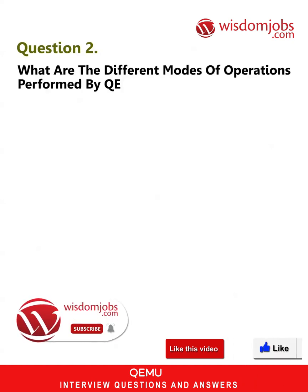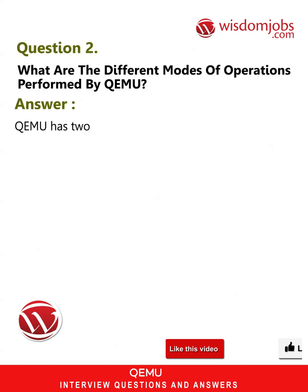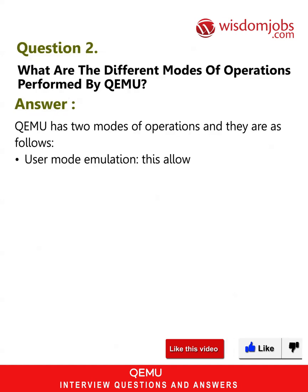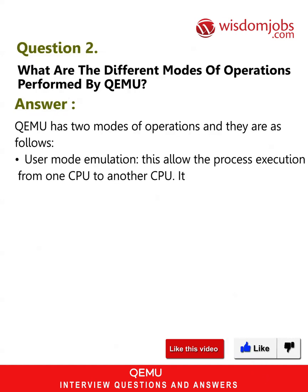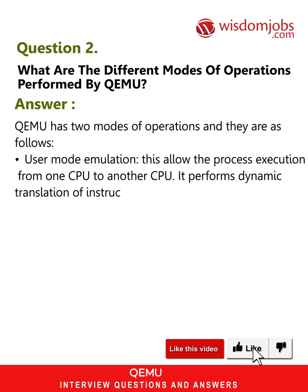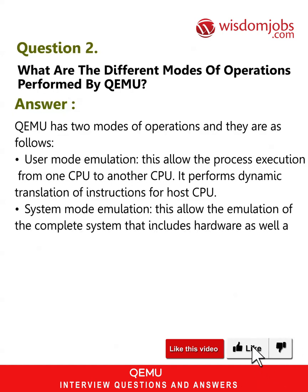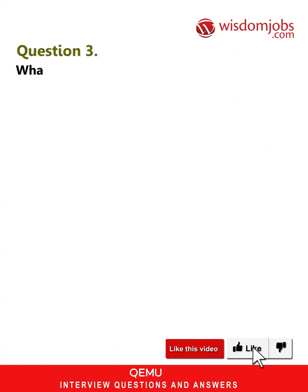Question 2: What are the different modes of operations performed by QEMU? Answer: QEMU has two modes of operations. User mode emulation: this allows the process execution from one CPU to another CPU, and it performs dynamic translation of instructions for the host CPU. System mode emulation: this allows the emulation of the complete system, including hardware as well as peripheral-related components.